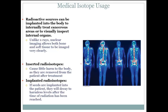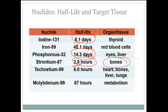Radioactive sources can be implanted into the body to internally treat cancerous areas or visually inspect internal organs. Unlike x-rays, nuclear imagery allows both bone and soft tissue to be imaged very clearly — you can see bones with x-rays, but by injecting nuclear tracers we can also see some of the softer tissues. If a radioisotope is inserted, it causes little harm to the body as it is removed after treatment. If implanted, the radioisotopes will decay to harmless levels after the treatment period. Remember, these are very short half-lives so they don't stick around very long.